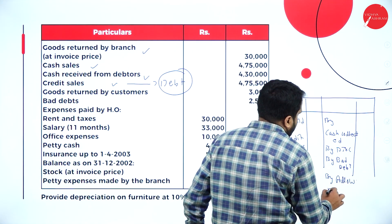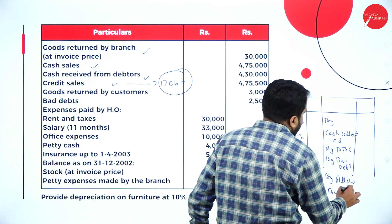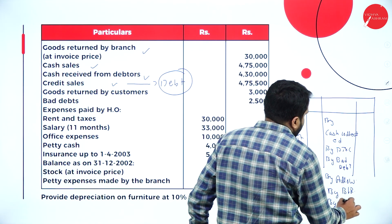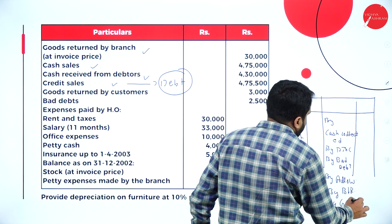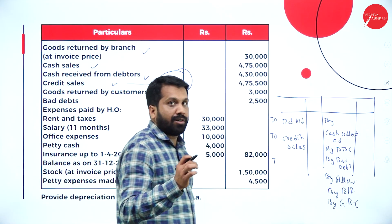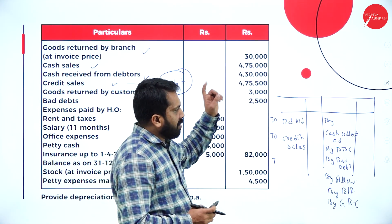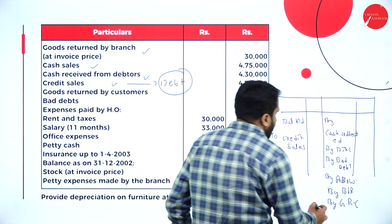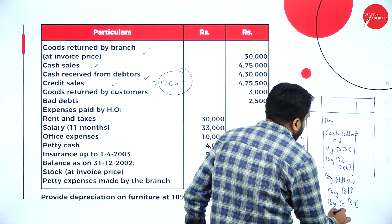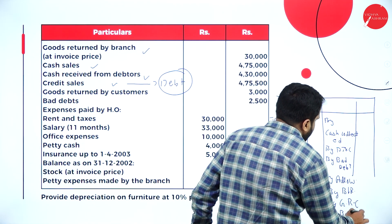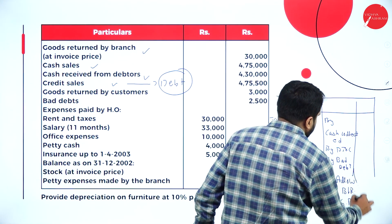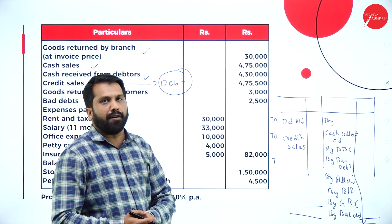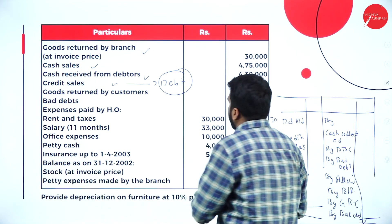Also on the credit side of the debtors account: bills receivable, goods returned by customer, and goods returned by branch goes to branch stock. The last item is balance carried down. This will be your debtors account format.